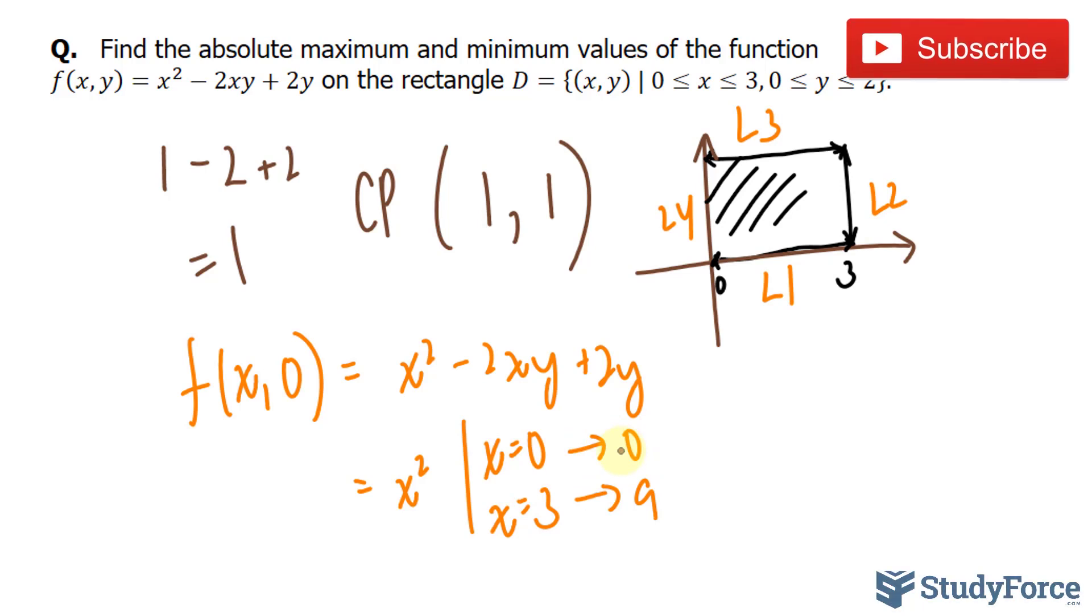So right now, our absolute maximum is at 9 because it beats 1, and our absolute minimum is at 0. Now you're supposed to do this for L2, L3, and L4.